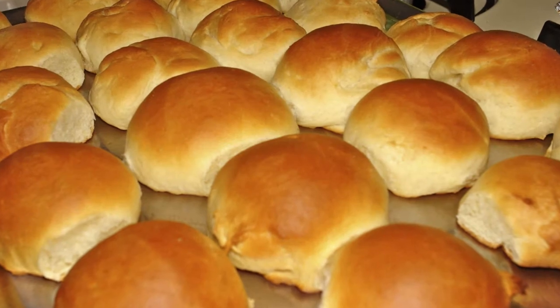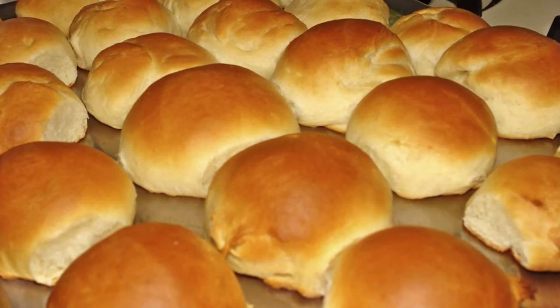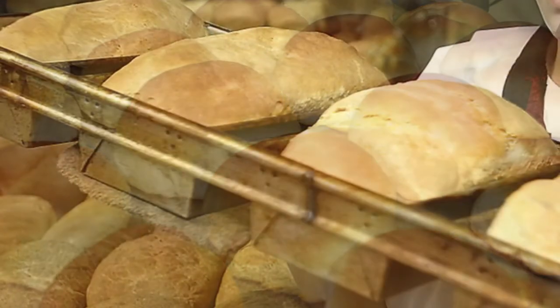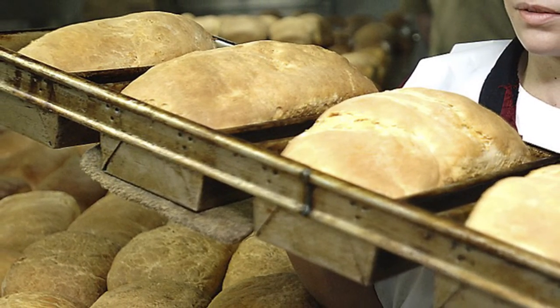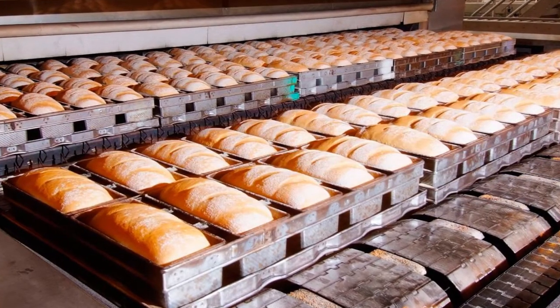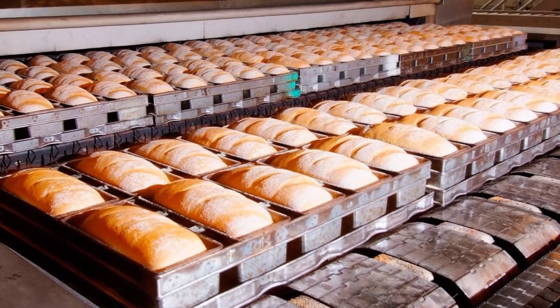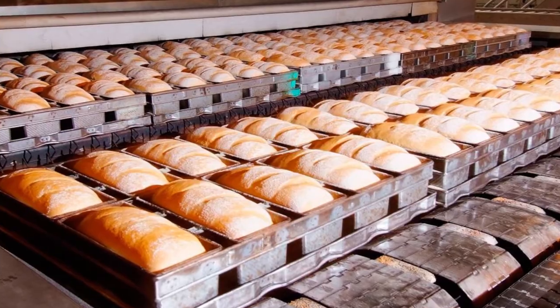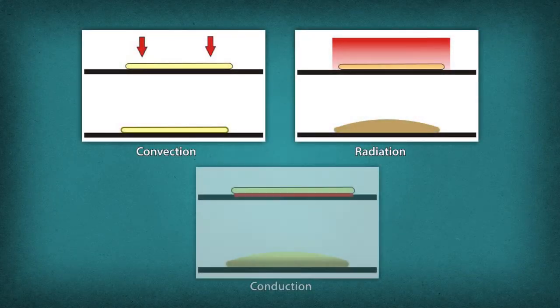Baking is the method of cooking food with the help of dry heat controlled in an oven, hot ashes or hot stones. A combination of three forms of heat is used for the baking process. These three forms are convection, radiation, and conduction.